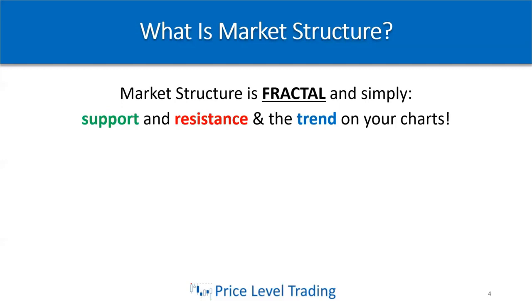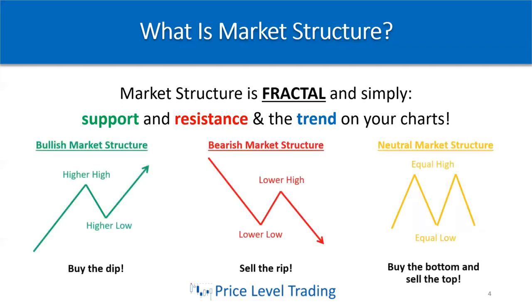Market structure is simply support and resistance and the trend on your charts. We could have bullish market structure, which is higher highs and higher lows — and we want to buy the dip in this case. Bearish market structure is lower lows and lower highs — we want to sell every rip that comes in, meaning every time we have a move up, we look to short that for a continuation down. Neutral market structure is more or less indecision — equal highs and equal lows — and the simple strategy is to buy the bottom and sell the top.